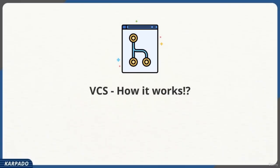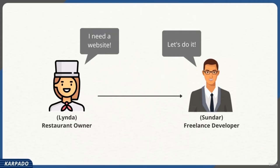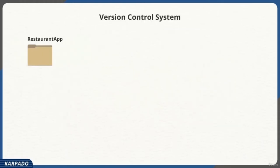Let's see how a version control system — or simply VCS software — works at a very high level. Once again, assume Sundar is a freelance developer who has got a new client, Linda, a restaurant owner who wants a website for her restaurant to accept online orders. Based on his past bad experiences, Sundar has decided to use a VCS software to manage versioning. He creates a folder called 'restaurant app' on his local computer and spends a few days creating a minimum functioning website.